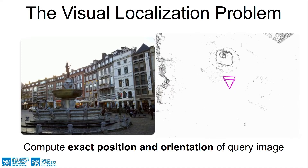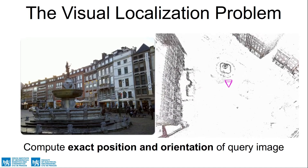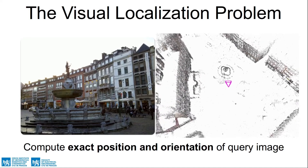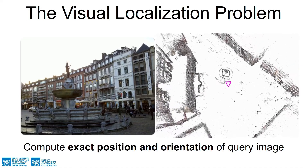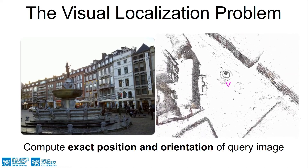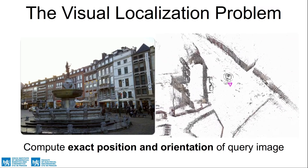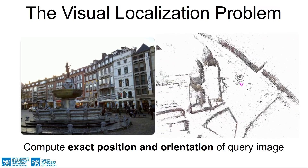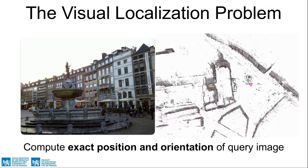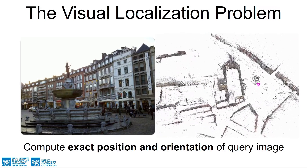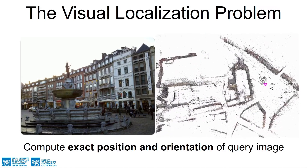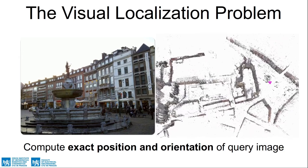Visual localization is the task of estimating the exact position and orientation from which a given image was taken. As shown here, it is common to represent the scene as a sparse structure-from-motion point cloud.